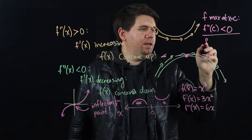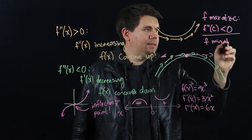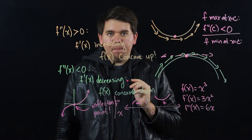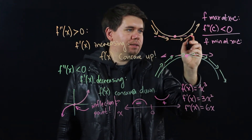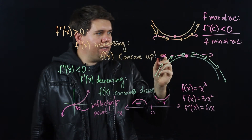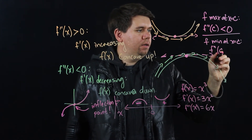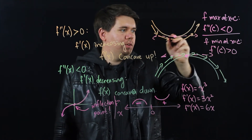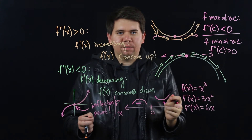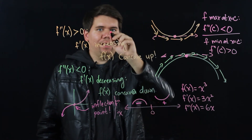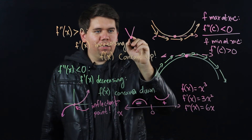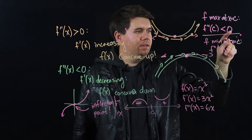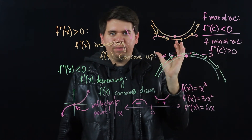Similarly, if your function has a minimum at some point x = c, your first derivative could be zero, but your second derivative must be positive because you're sitting at the bottom of the valley. That is, if your second derivative exists — you might be in a situation like the absolute value graph where the derivative doesn't exist. But if it does exist: for maximums, the second derivative is negative; for minimums, the second derivative is positive.